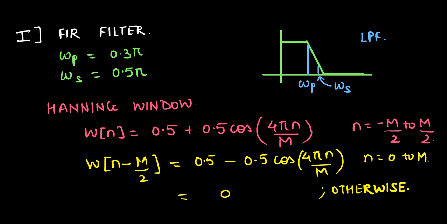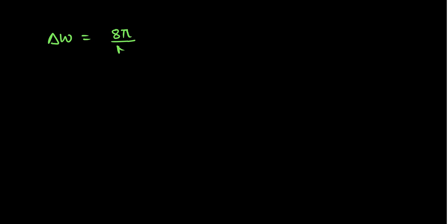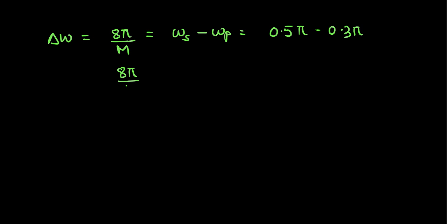To use the Hanning window we need two things: the order and the cutoff frequency. The order is obtained using the transition width of the Hanning window, given as delta_omega equals 8*pi divided by M, which equals omega_S minus omega_P = 0.5*pi minus 0.3*pi = 0.2*pi. Therefore 8*pi / M = 0.2*pi, which implies M equals 40. So the order of the filter is 40.